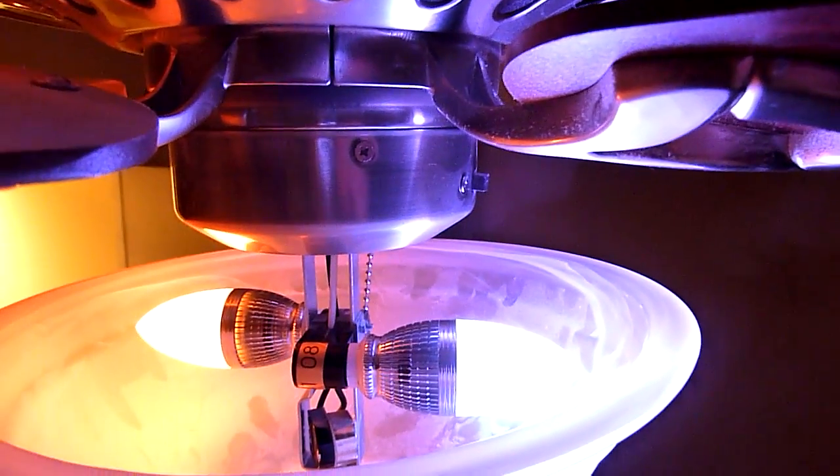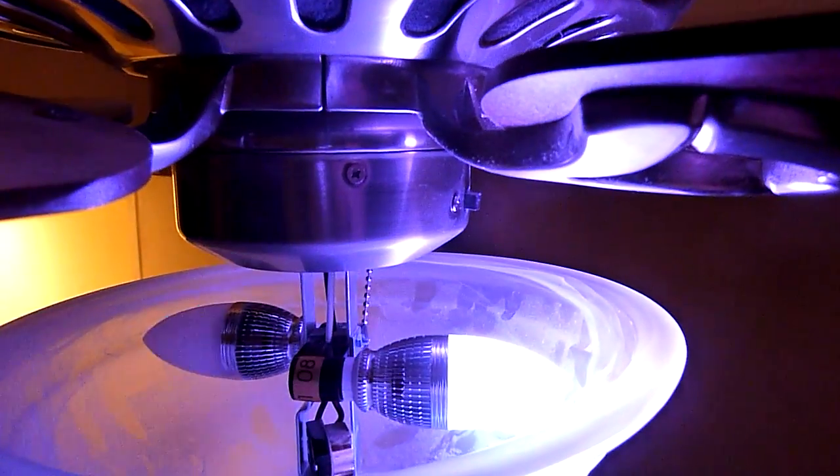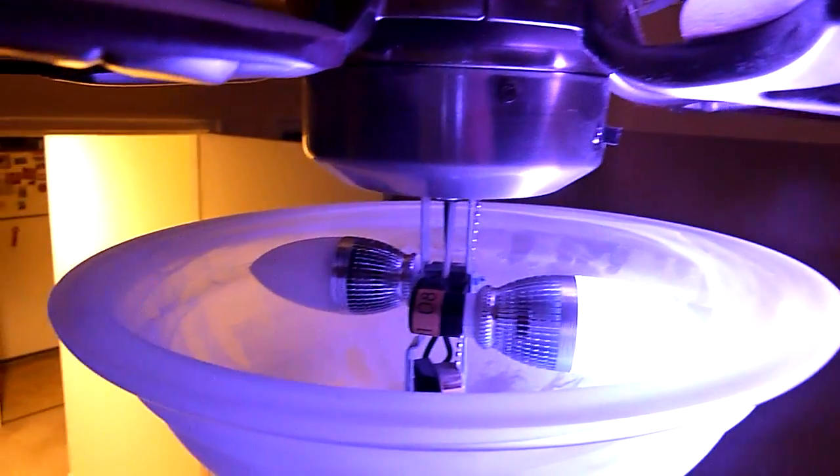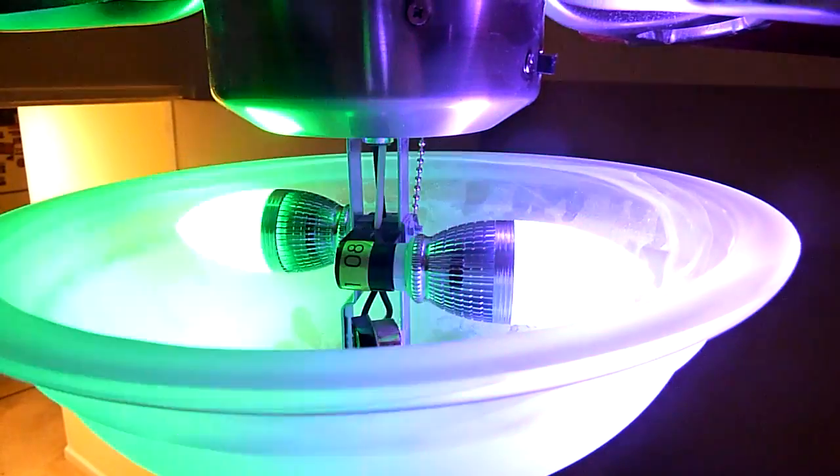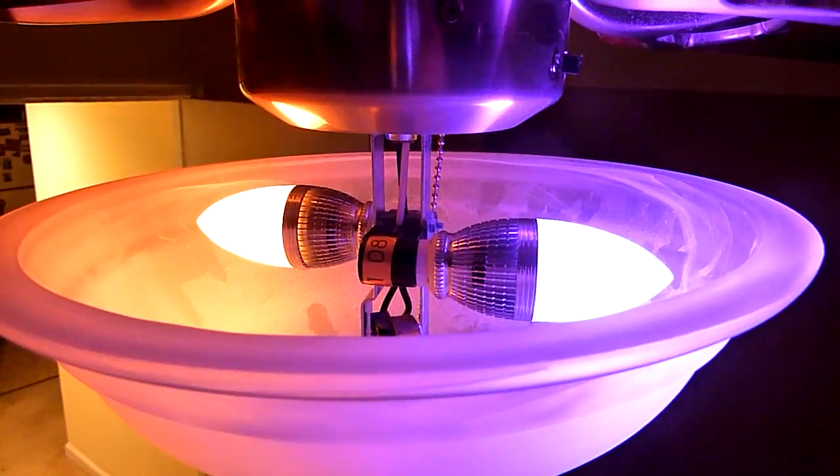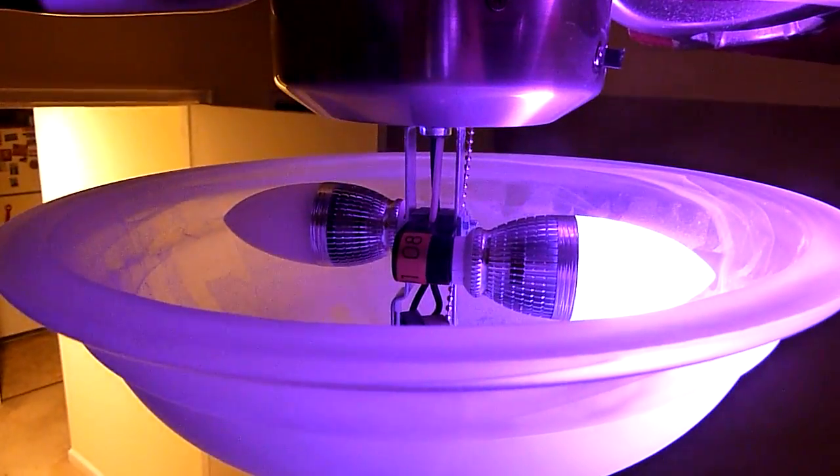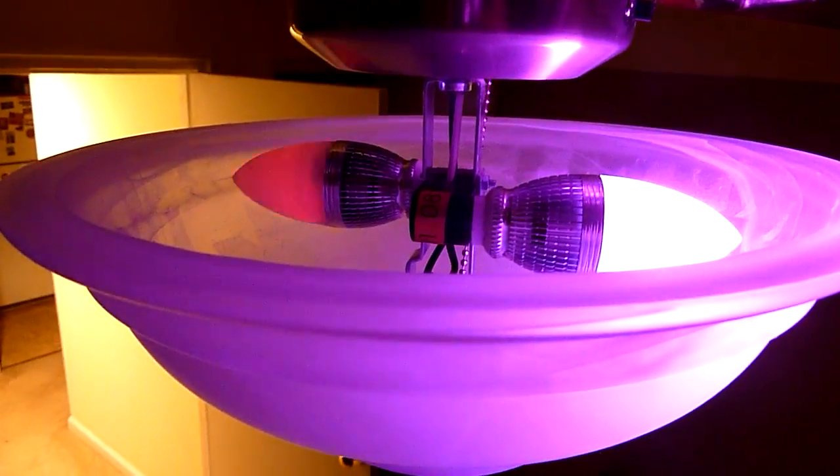Now we can see the other one is slowly changing from color to color. The first one has strobe functions. They are supposed to be two identical light bulbs. Both are supposed to have strobe capabilities.